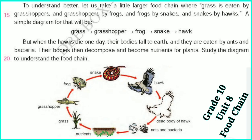To understand better, let us take a little larger food chain. Why are grasses eaten by grasshoppers, and grasshoppers by frogs, and frogs by snakes, and snakes by hawks?